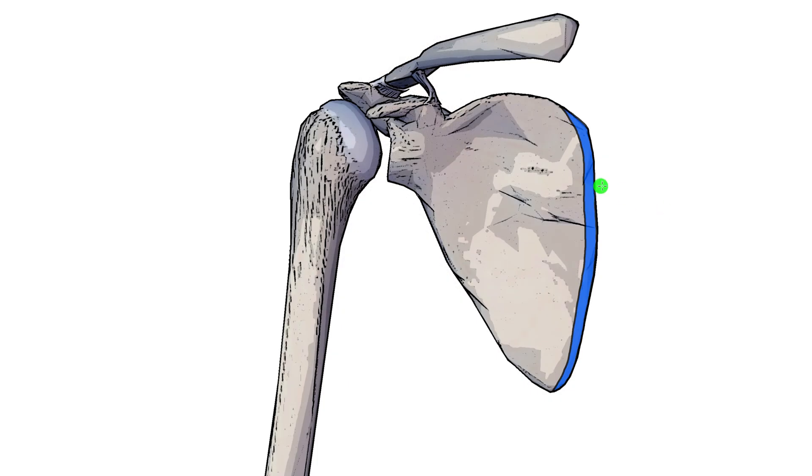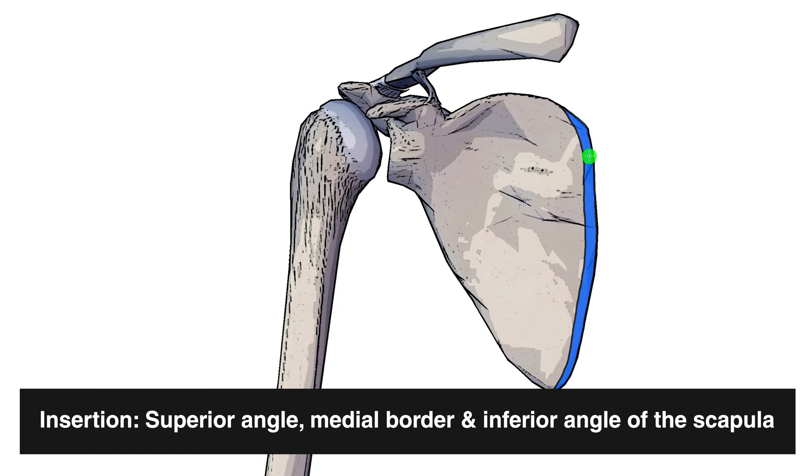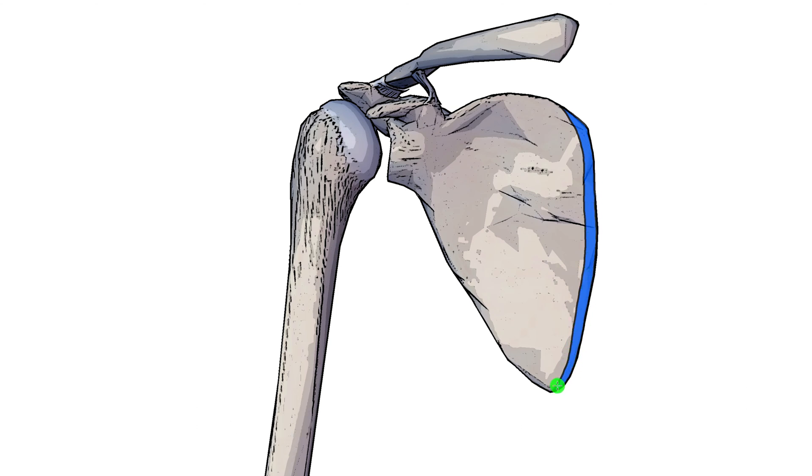So here we can see an anterior view of the scapula, of the humerus and of the clavicle. Ordinarily you'd have the rib cage just in front of the scapula here, but I've moved it out of the way so you can more easily see this insertion which I've highlighted here in blue. The serratus anterior's insertion is going to begin on the superior angle of the scapula, work its way down the scapula's medial border, and then finish on the inferior angle of the scapula.